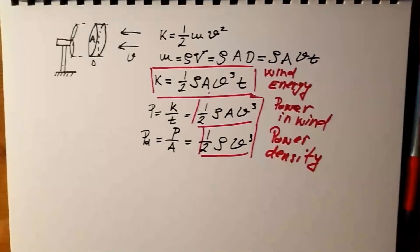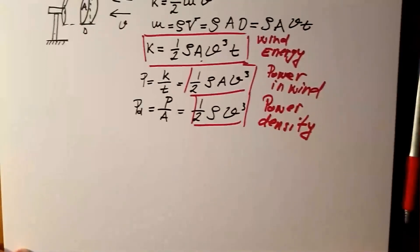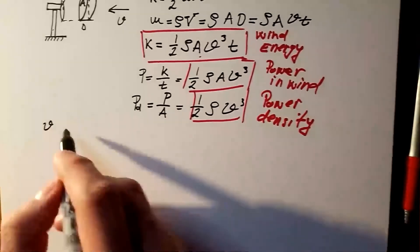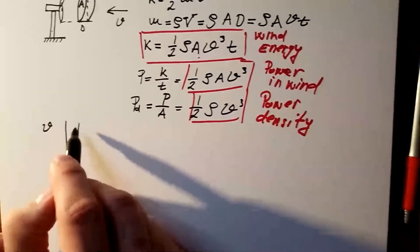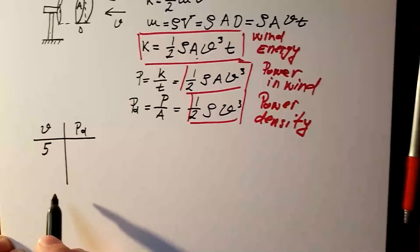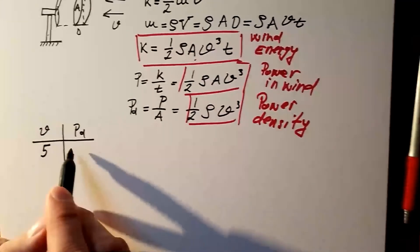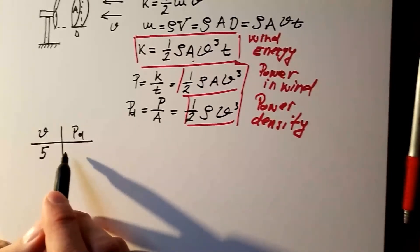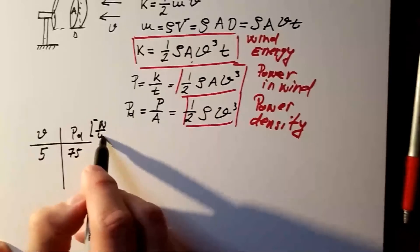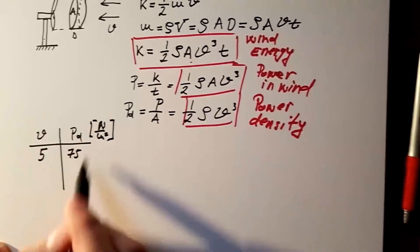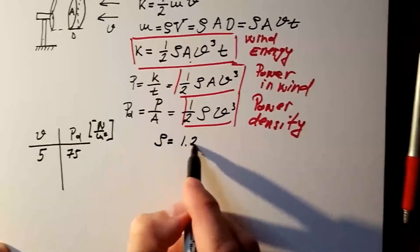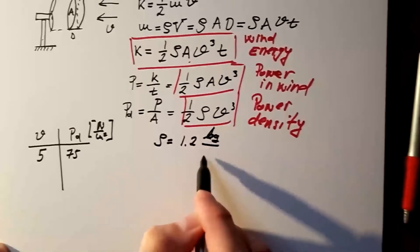So, if I make the following table, where I will have, let's say, here, wind speed in meters per second, then over here, I will have power density. If I have wind speed of 5 meters per second, the corresponding power density will be 75 Watt per square meter, where I assumed that my air density is 1.2 kg per cubic meter.